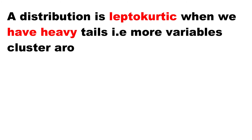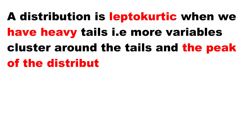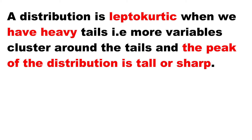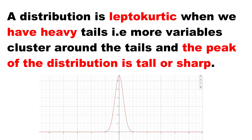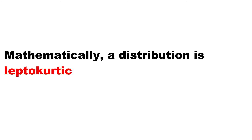The next type of kurtosis is the leptokurtic. For a leptokurtic distribution, it simply implies that we have a distribution with a very heavy tail, meaning most of the variables in the data set cluster around the tail, and we are going to be having a very high, sharp, or tall peak. That is a leptokurtic distribution.